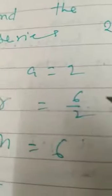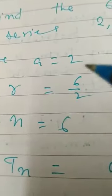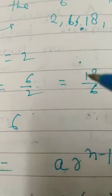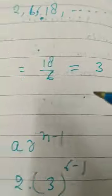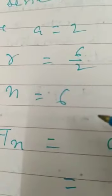Here the first term is 2 and the common ratio R is 6 upon 2, or 18 upon 6, which is 3. The number of terms is 6.